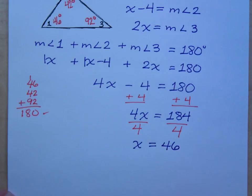So, make sure that you state your answer. And for this one, it's nothing more than just listing your information. So, the measure of angle one is 46 degrees. The measure of angle two is 42 degrees. And finally, the measure of angle three was 92 degrees.